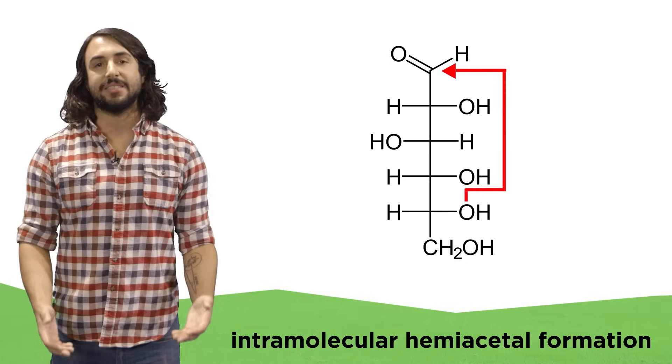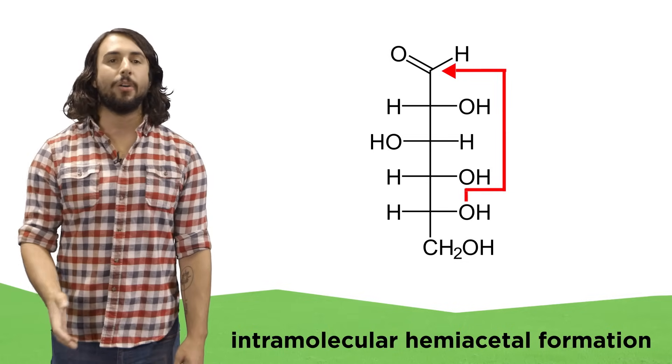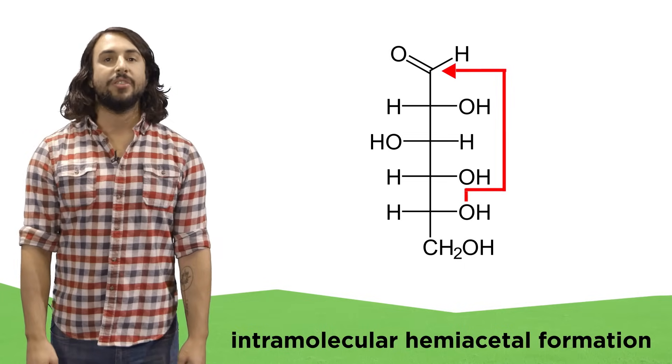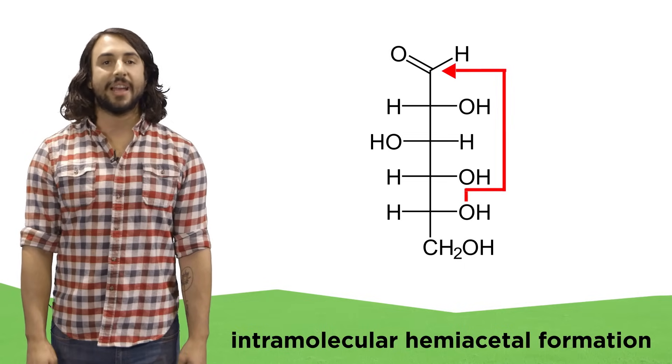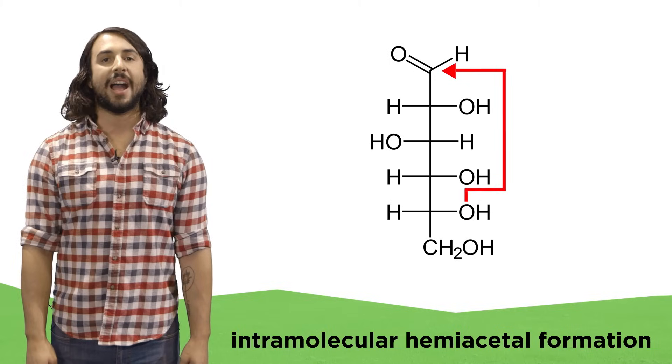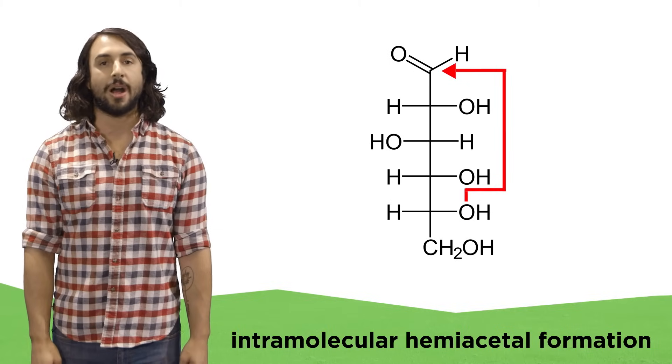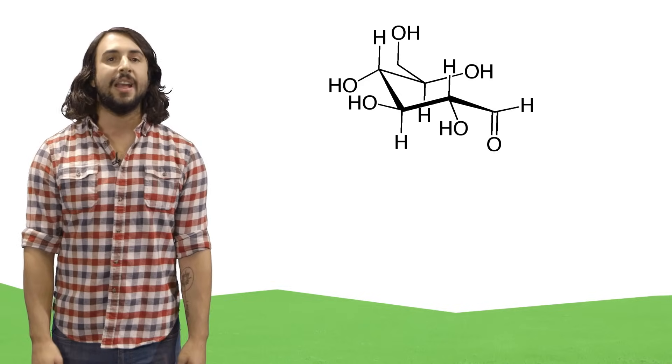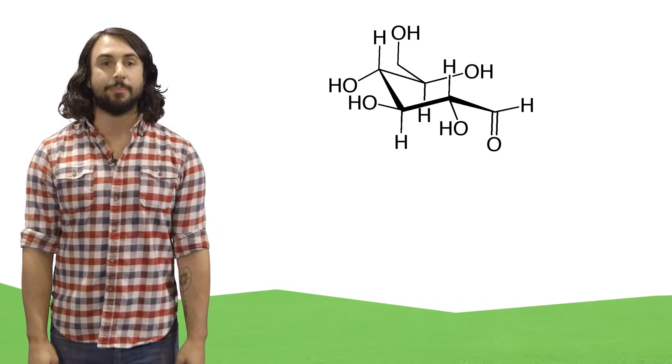We know that when hemiacetals form, it's because an alcohol attacks an aldehyde or ketone. In this case, it's an intramolecular cyclization because the hydroxyl group and the carbonyl are on the same compound. Now let's orient this linear molecule in a way that we can see the cyclization take place.